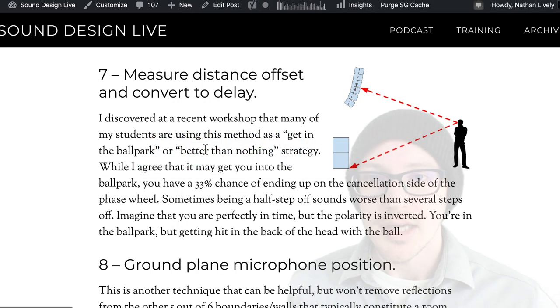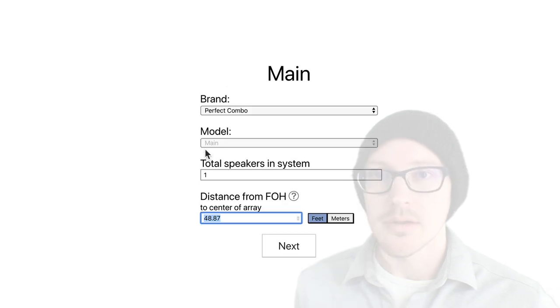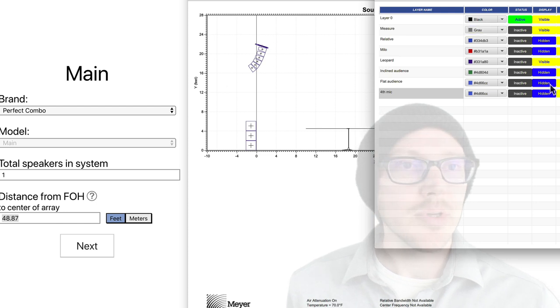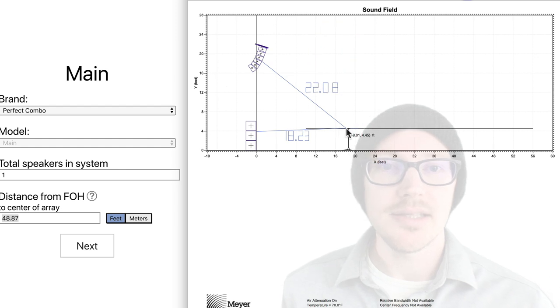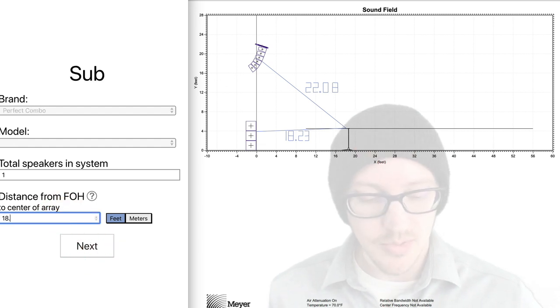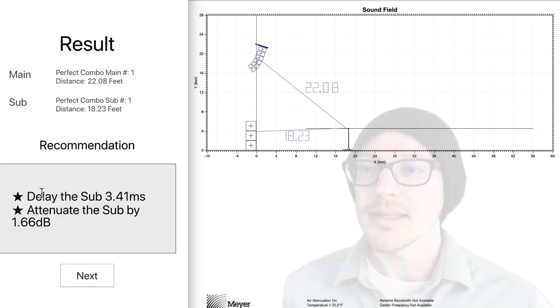I also have a helpful little tool here, and this tool is basically just going to quickly help me convert distance to time. So if I were to get out my laser distance measure and see that the distance from my measurement position is 22 feet and 18.23 to the sub, let's put that into my little tool here: 22.08 and 18.23.